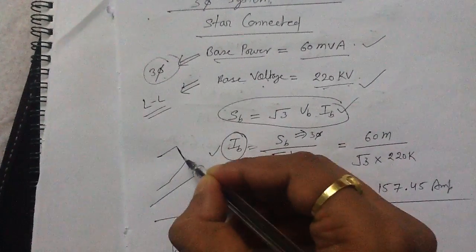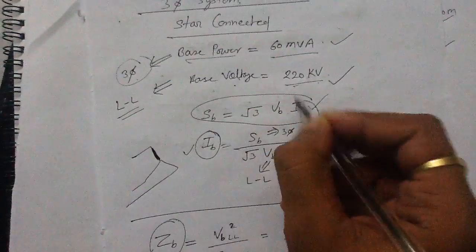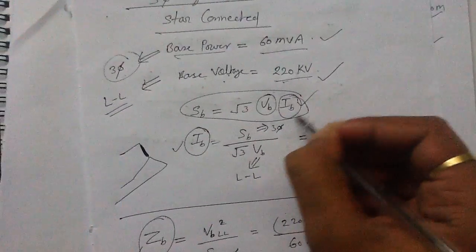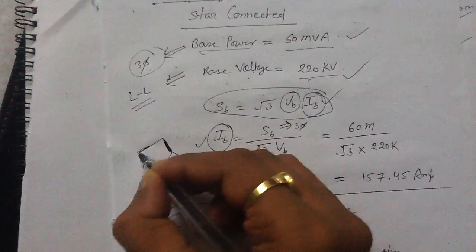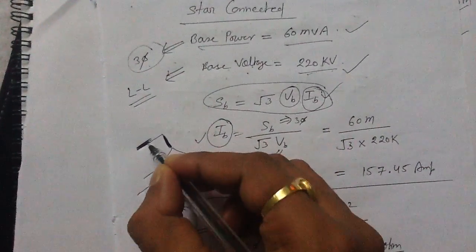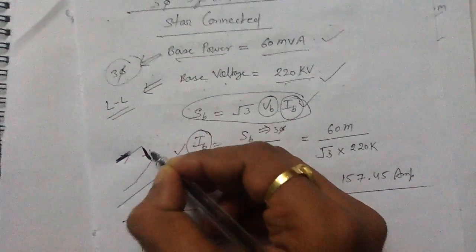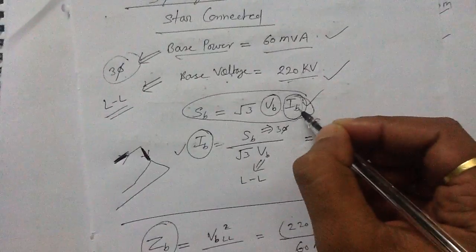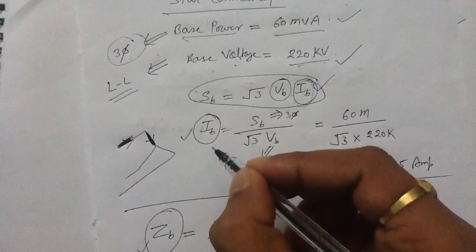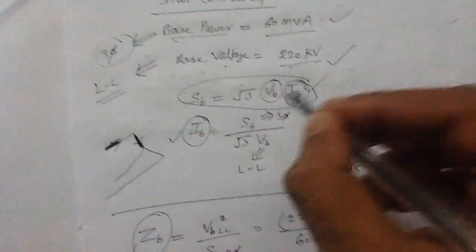Always remember: in this formula, the voltage is the line-to-line voltage and the current is the line current. So the base current you are going to find out is the line current. This line current in the star-connected system also flows in the phase, so this line base current is also the phase base current.